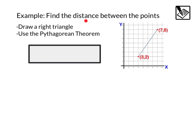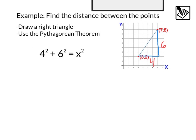One cool way we can use the Pythagorean theorem is to find the distance between two points. We draw a right triangle and then use the Pythagorean theorem. Here we have two points, (3, 2) and (7, 8). We draw a right triangle between those points. Counting the spaces, the horizontal distance is 4 and the vertical distance is 6. So we set up the equation 4 squared plus 6 squared equals x squared, where x is the distance. That gives us 52 equals x squared, and square rooting both sides gives a final length of square root of 52.